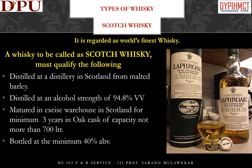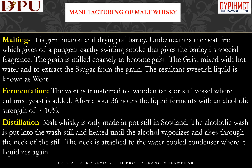Scotch whiskey is regarded as the world's finest whiskey. A whiskey to be called Scotch must qualify the following parameters: it must be distilled at a distillery in Scotland from malted barley, distilled at an alcoholic strength of 94.8% by volume, and matured in an excise warehouse in Scotland for a minimum period of 3 years in oak casks of capacity not more than 700 litres. It must be bottled at a minimum 40% alcohol by volume. Let us now go through the manufacturing of malt whiskey.